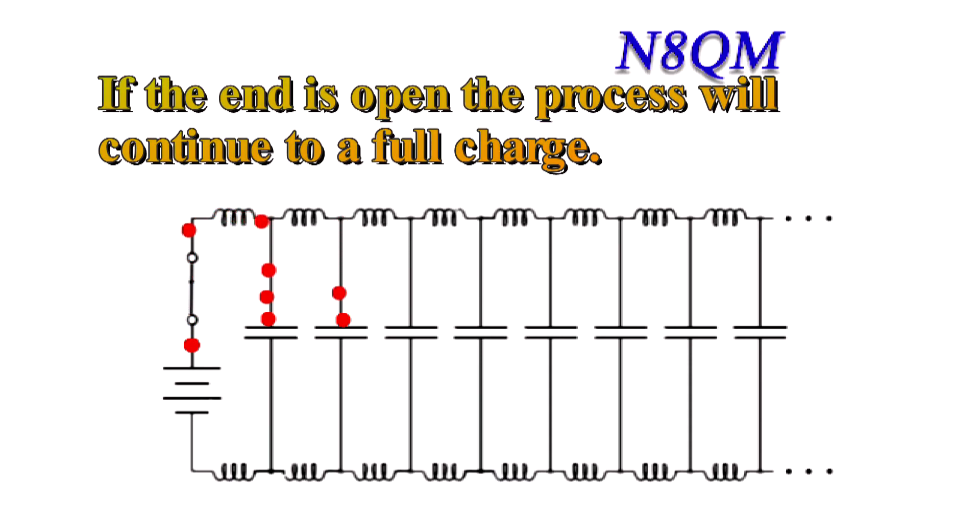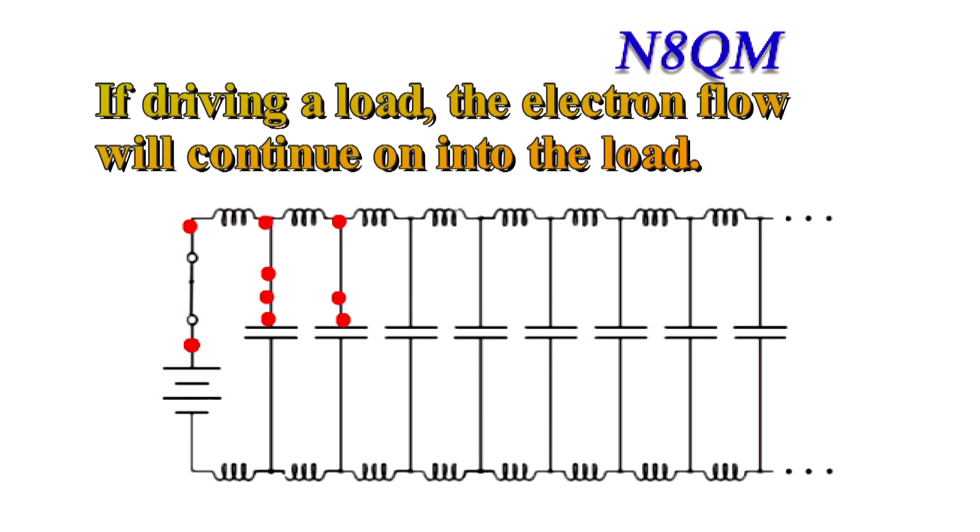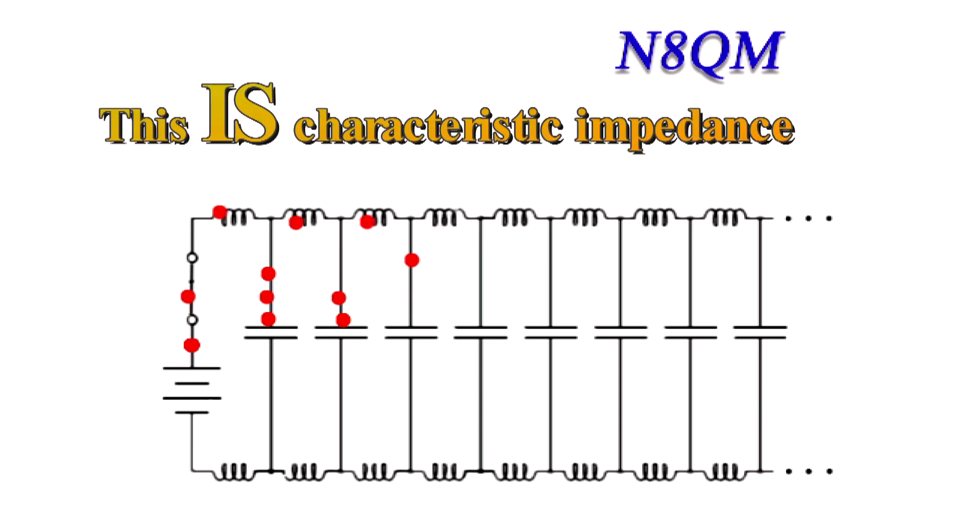This is true for an open circuit wire, that is, no load. If there were a load on the end, then the electrons would of course continue to flow into that load.